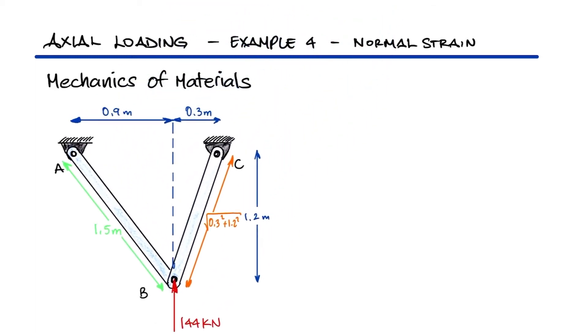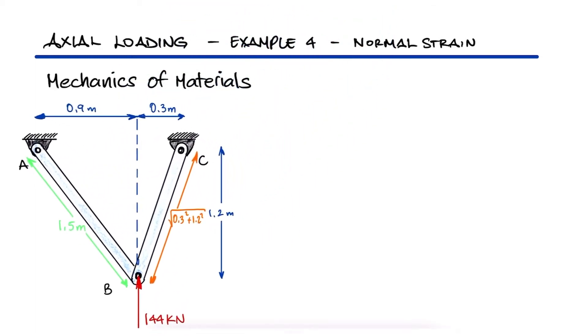For the example problem of the main video, link below, we would like to calculate the engineering strain and the true strain of member AB if we know that its length has been compressed by 217 microns due to the 144 kN external load.